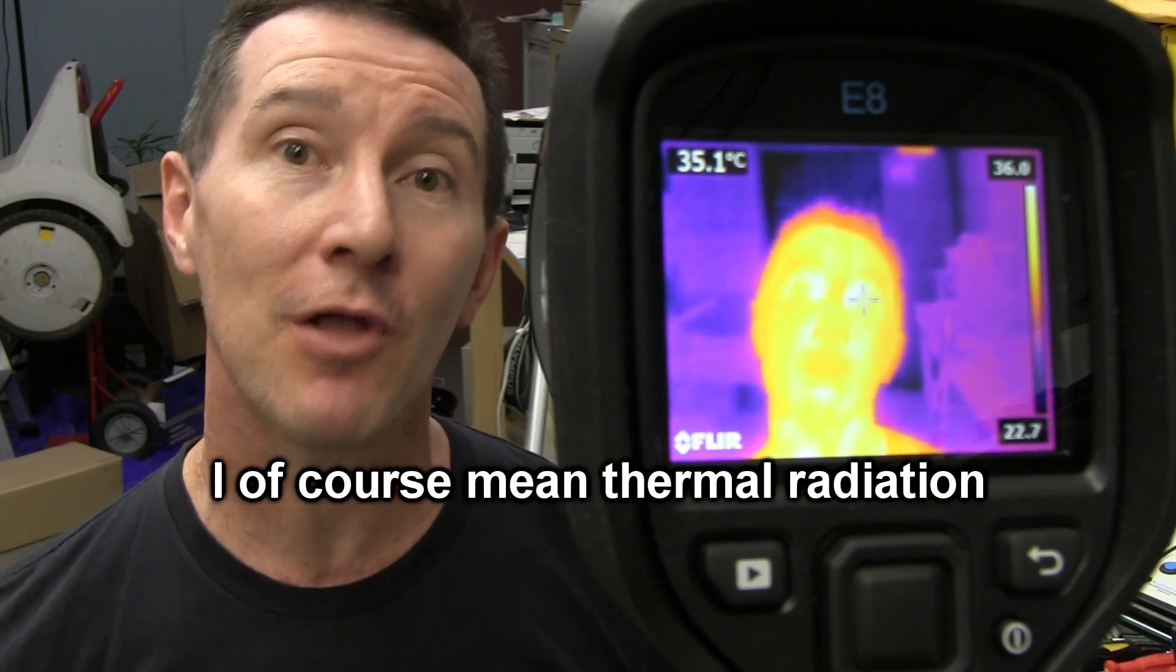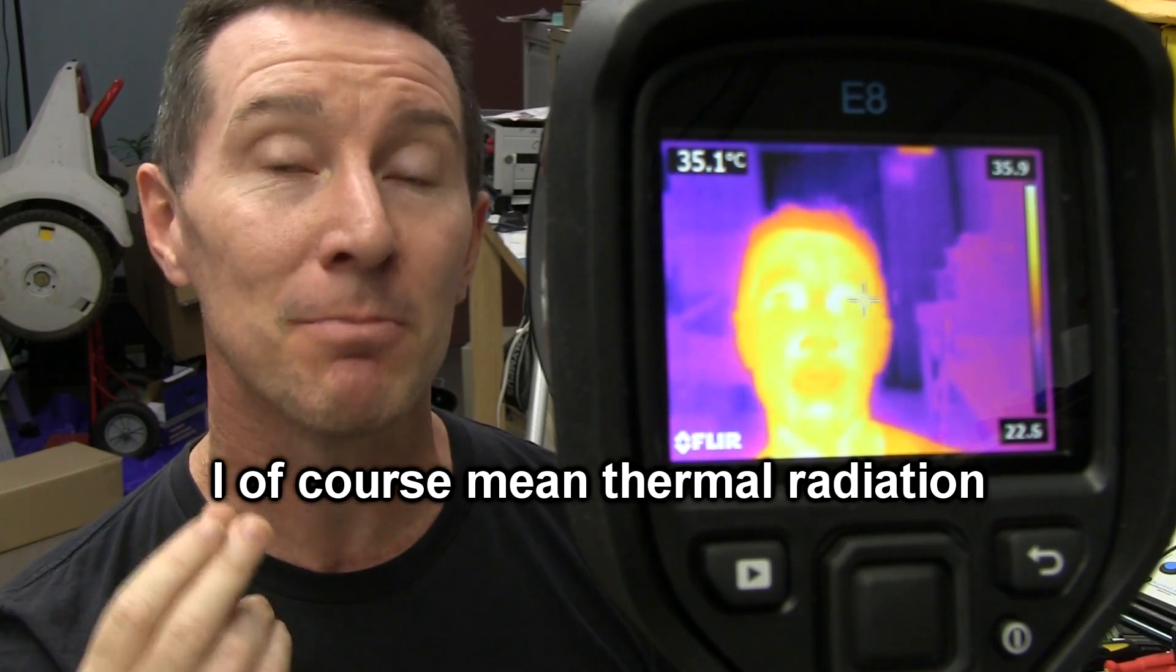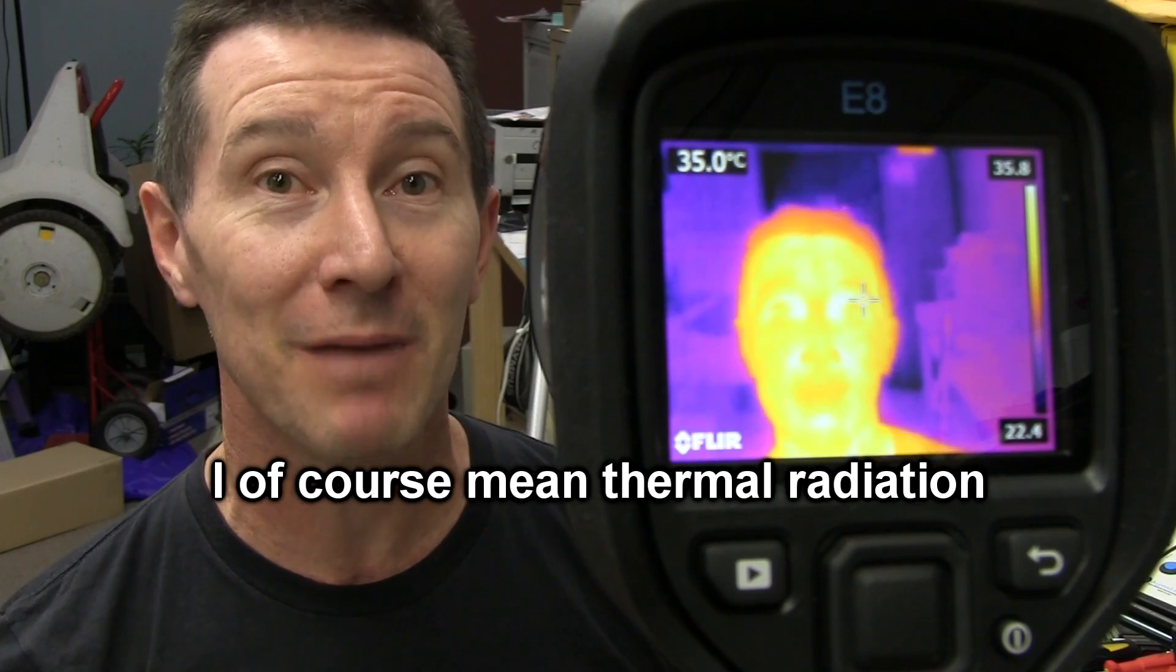And that is why this FLIR E8 thermal imaging camera here doesn't use a glass lens like my camcorder does, because it wouldn't let through the thermal energy. It would just block it. So it actually uses a germanium lens, really expensive germanium lens that is very transparent in that thermal IR range that this camera is designed to operate at.